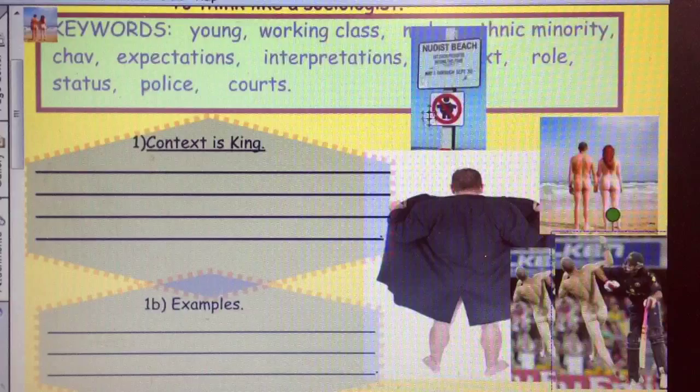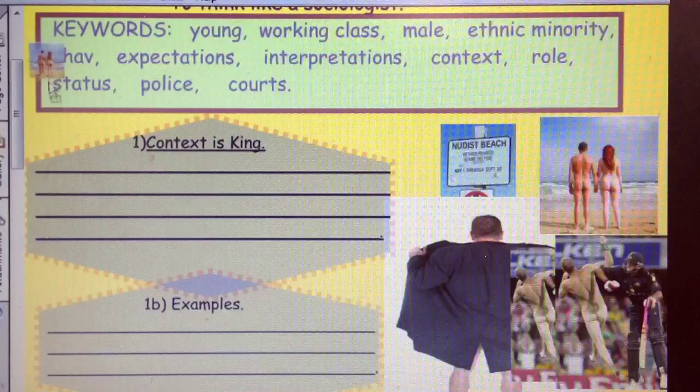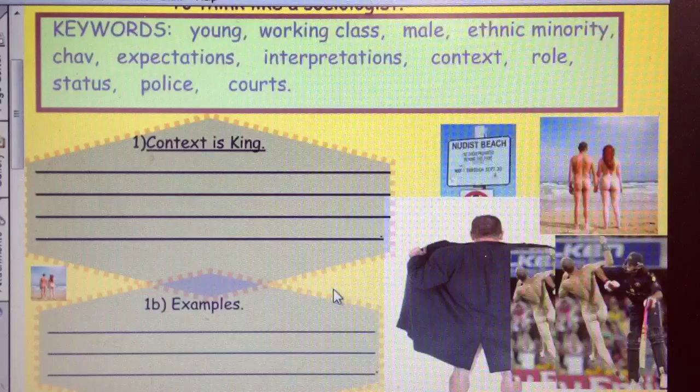But nudity is the same in all three of them. So it is not the nudity. It's the where and the when. And that's the context. So context is king. And we're going to write some examples. Any more we can think of in class. Actions are the same. It's the where and the when. That's how labelling theory starts.